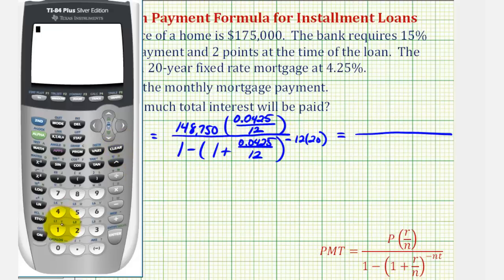So for the numerator, we'll have 148,750 times 0.0425 divided by 12. We'll go ahead and round this. It'll be approximately 526.8229.